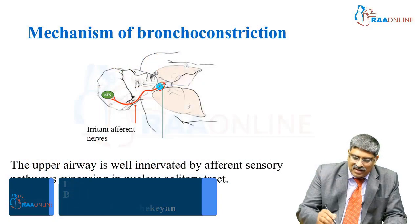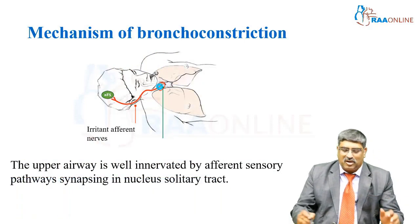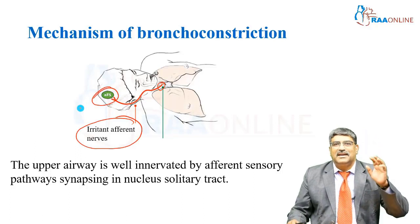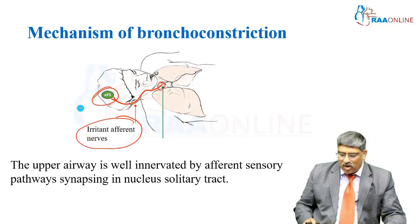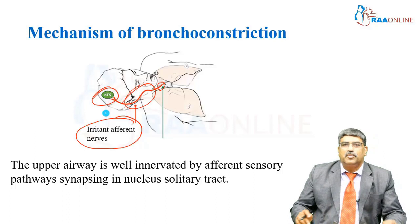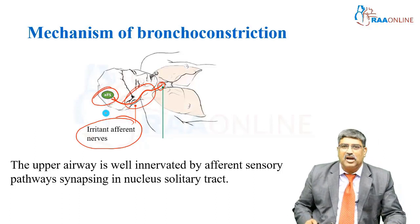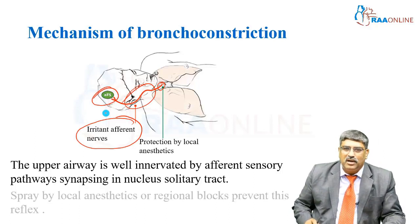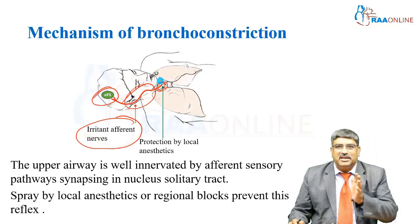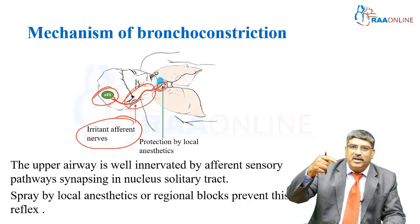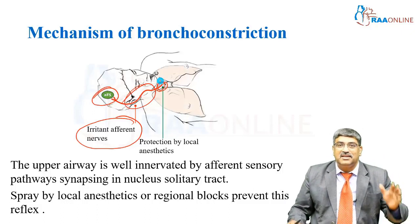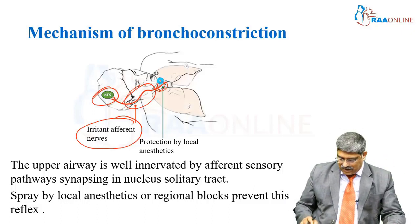The airway is innervated by many sensory afferent nerves which go to the nucleus tractus solitarius. You need to interrupt this tract to prevent bronchoconstriction. For example, infiltration of local anesthetic prevents nerve conduction, or regional blocks around the airway can prevent this reflex bronchoconstriction.